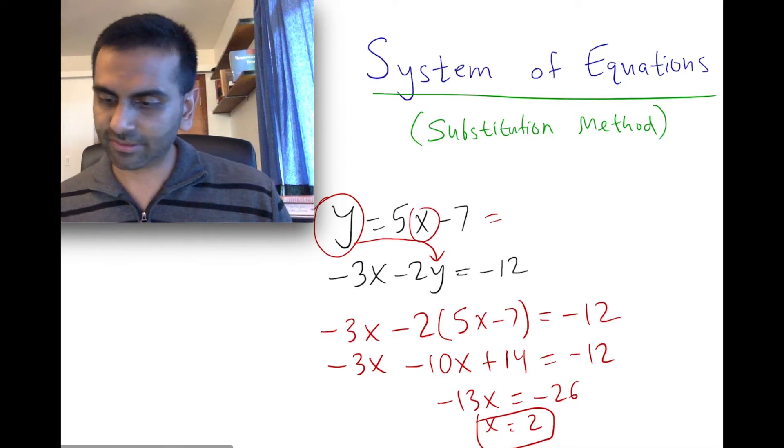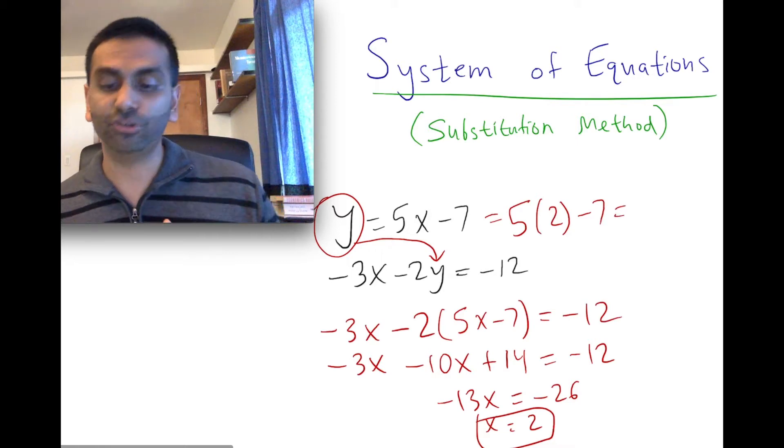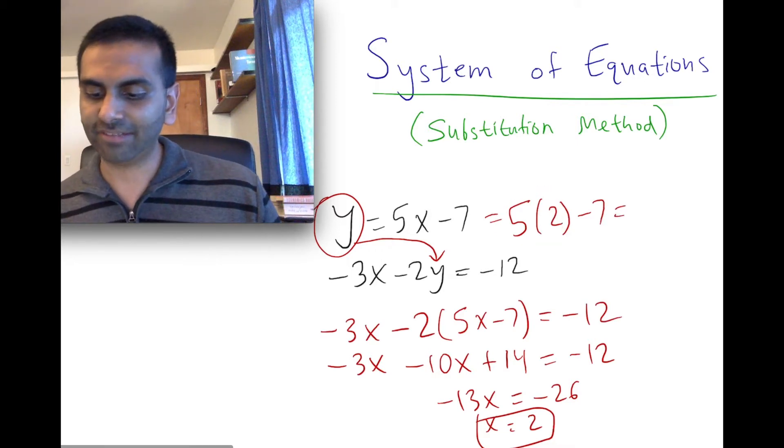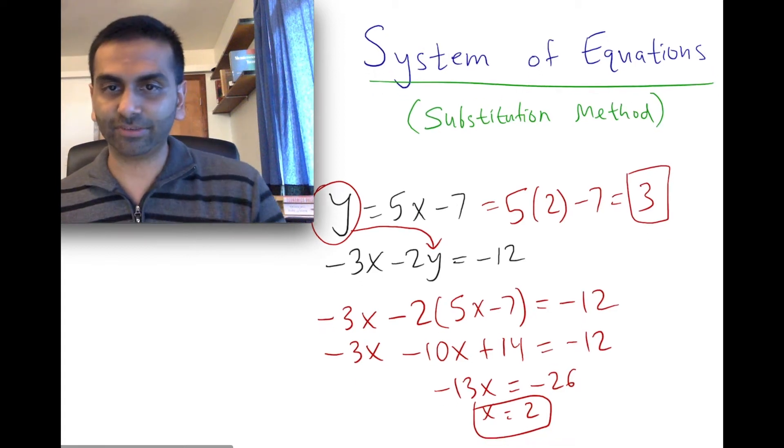So x is going to equal 2. So y is going to equal 5x, which is 2, minus 7. So 5 times 2 is 10. 10 minus 7 is 3. So y is 3. Your final answer is x is 2, y is 3.